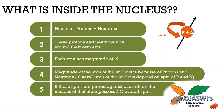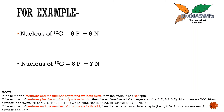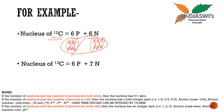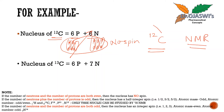If these spins are paired against each other, the nucleus of that atom possesses no overall spin. Look at this example of C12. In the nucleus of C12 carbon there are 6 protons and 6 neutrons. Among these 6 protons, each proton is spinning around its own axis and they are paired. Each neutron is also spinning around its own axis and they are paired. So they just cancel each other's spin. This particular nucleus does not have its overall spin — no spin. Therefore, we cannot study the C12 nucleus using NMR spectroscopy.